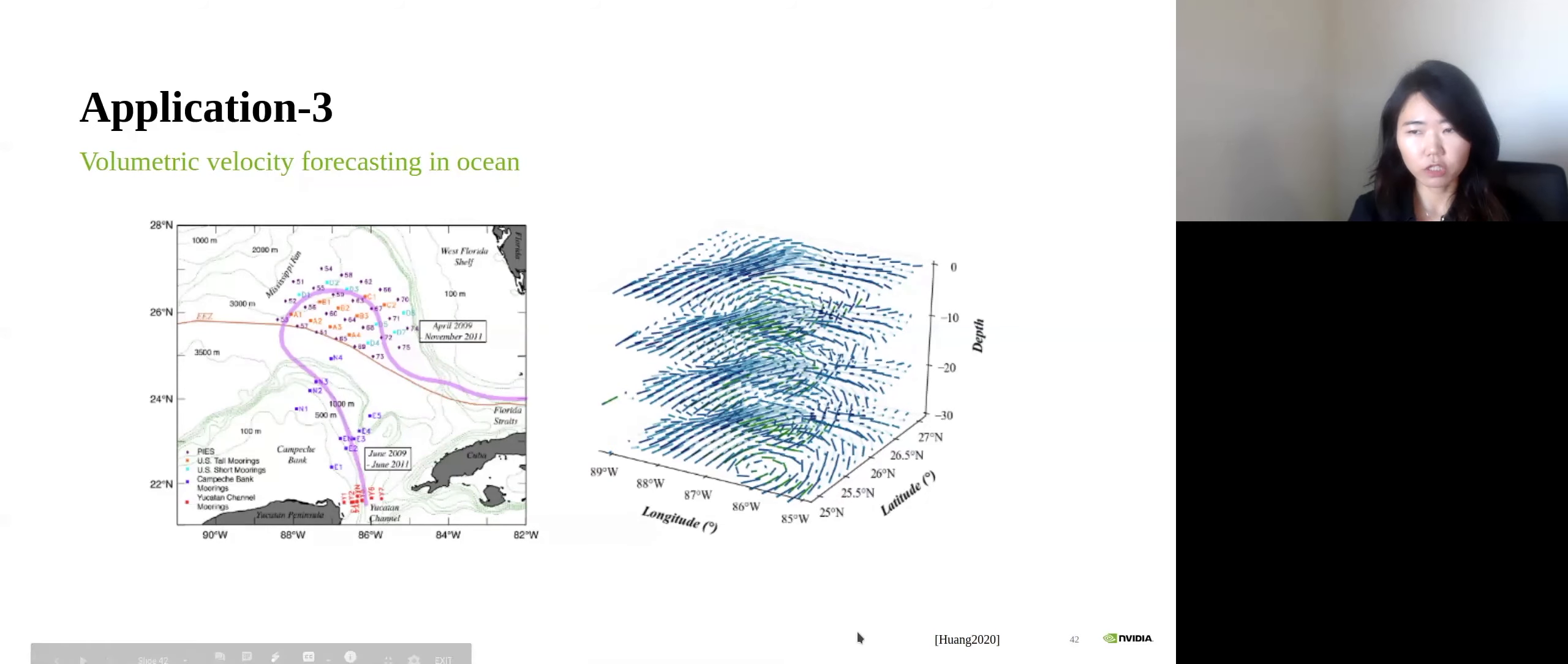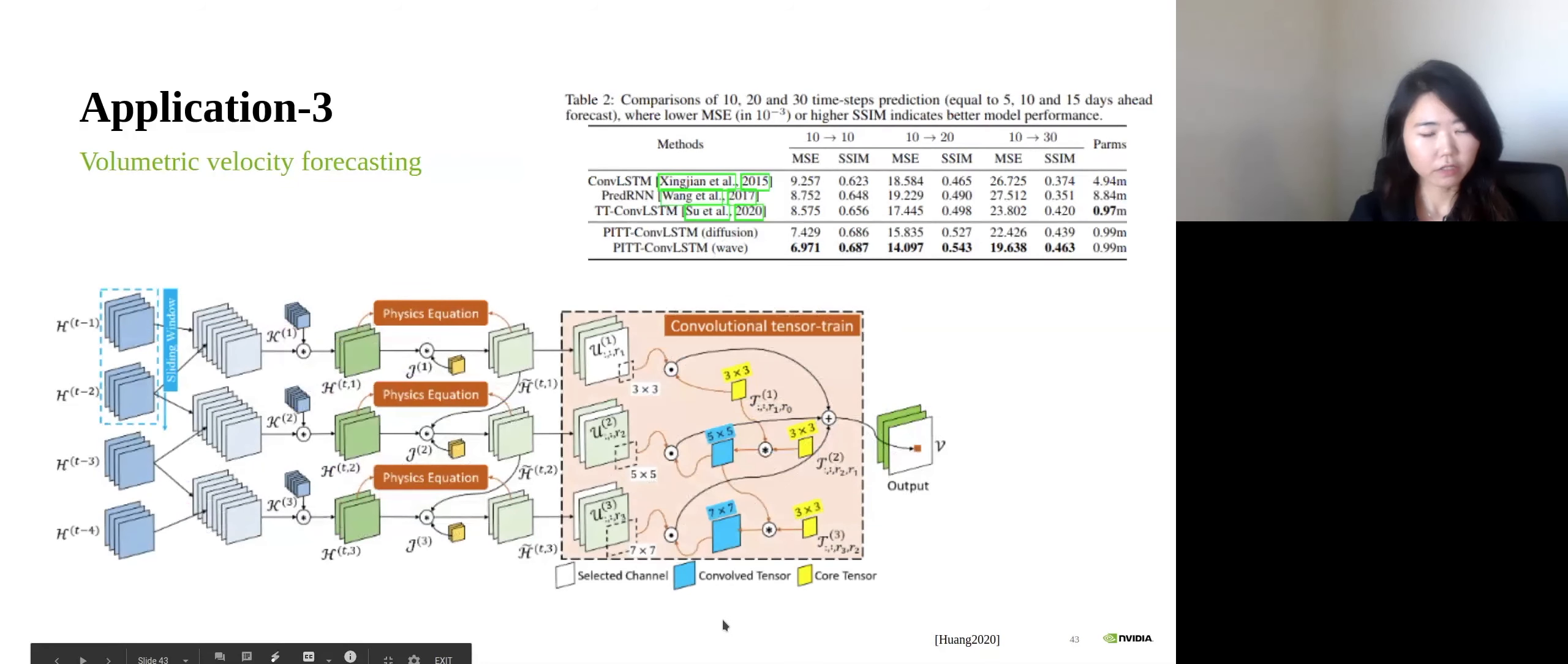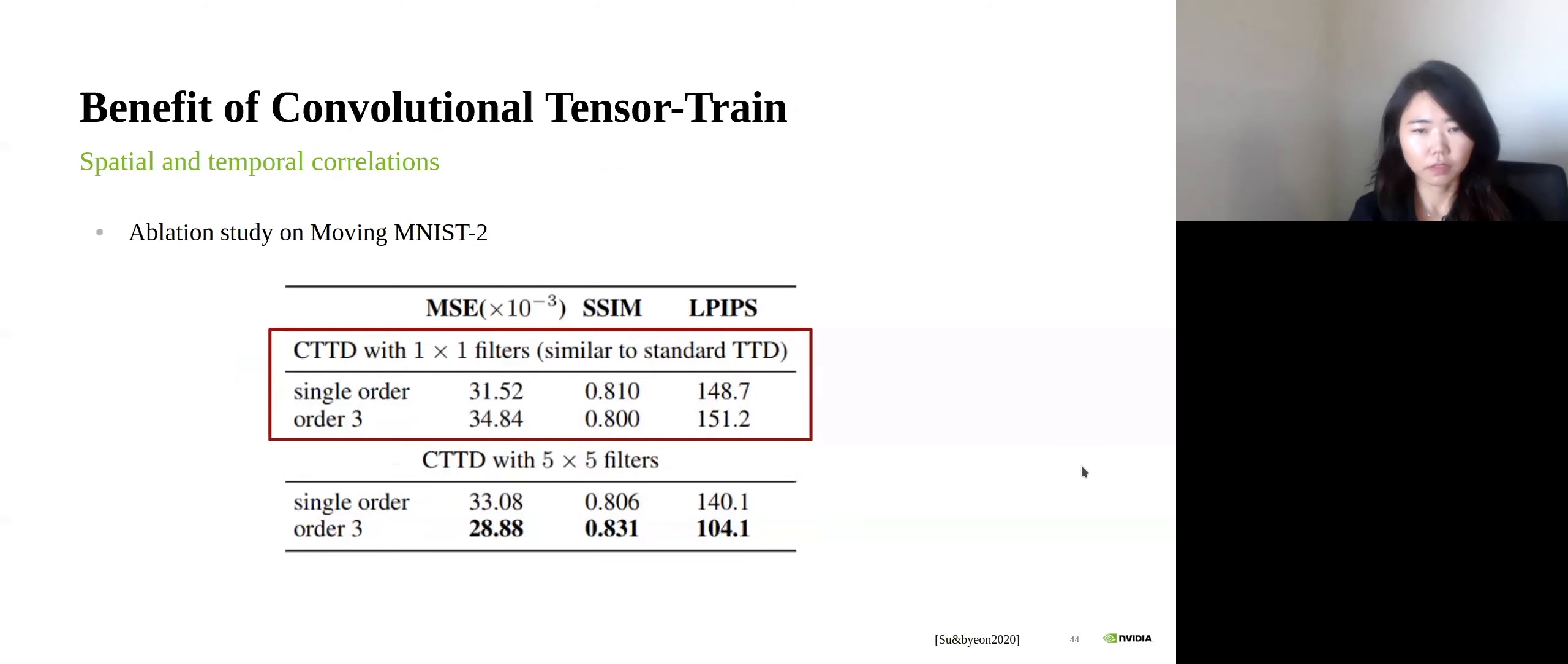The last application is the volumetric velocity forecasting in ocean. Velocity forecasting in the loop current region is critical for understanding the ocean geography. To understand the loop current behavior, learning long range spatial temporal connections is essential. This is the main architecture for this task. It looks a bit different, but this left side is the preprocessing module I showed earlier, and the right side here is the convolutional tensor-train module. Then they injected the physical constraint in the middle here to learn this task better. Then you can see that they outperformed compared to other models, including our initial ConvLSTM model.